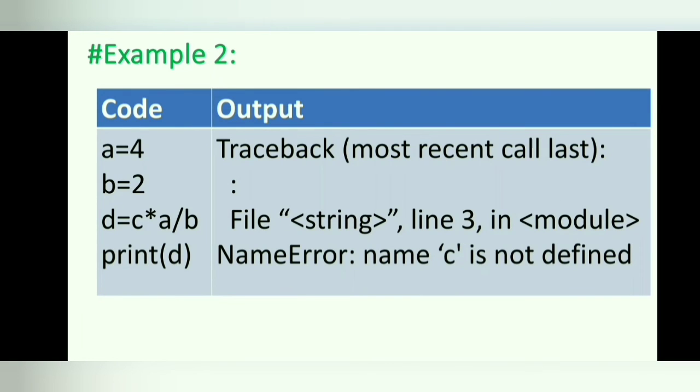Example 2. The last line of the error message indicates the type of error. In this example, the error is name c is not defined. Here we have defined the variable a and b but we have not defined the variable c. That's why Python will return an error message.